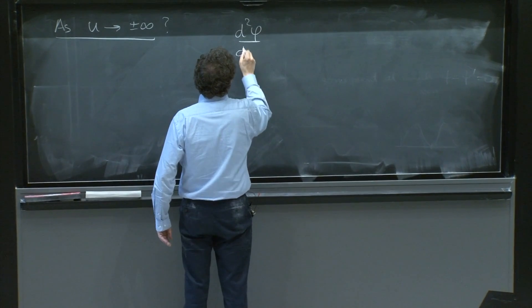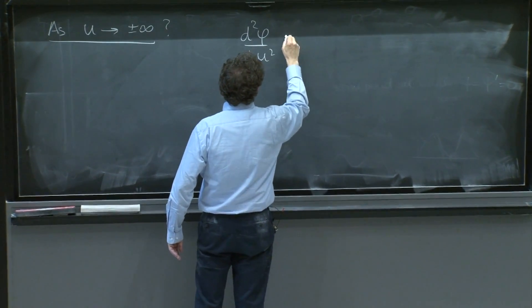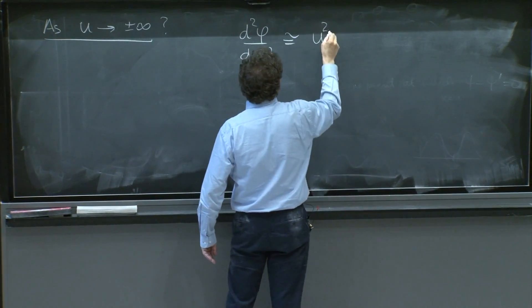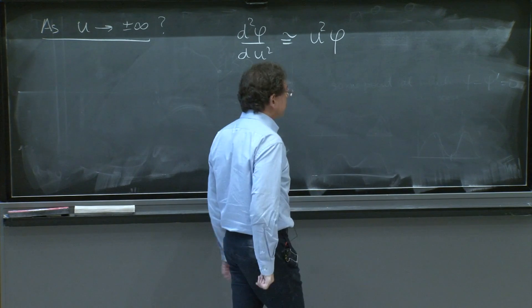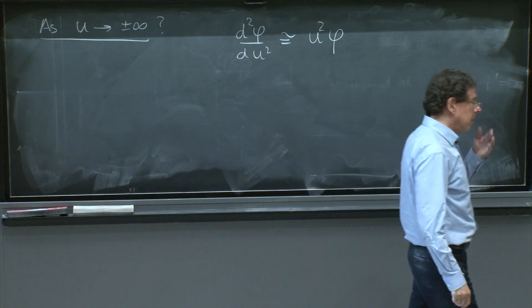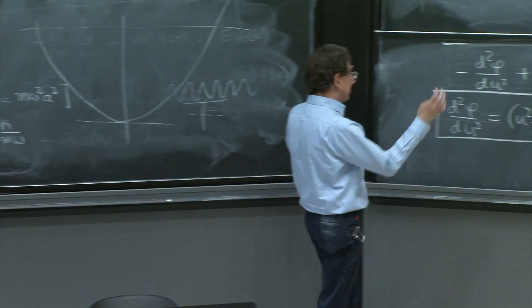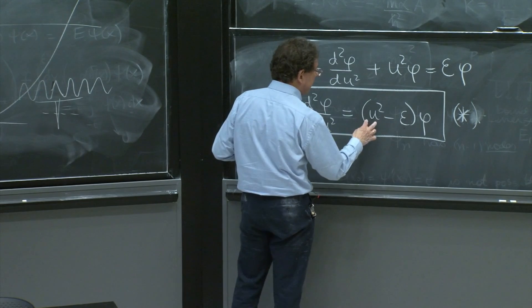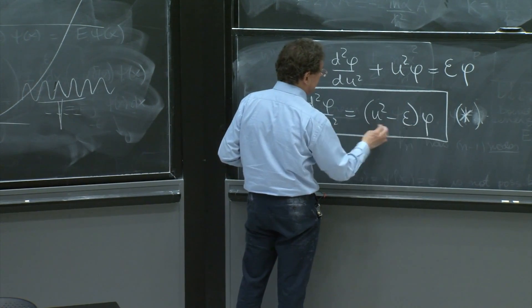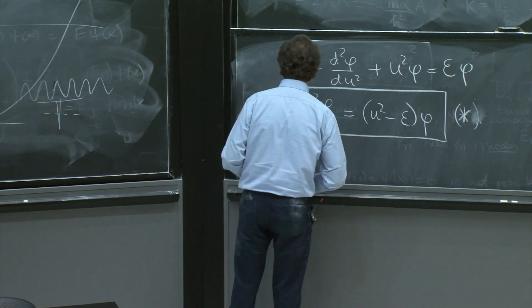The second derivative of φ, the u squared is roughly equal to u squared φ. Because E is a constant, it doesn't blow up. So the differential equation, the terms that are supposed to be largest in this right hand side is the u squared.